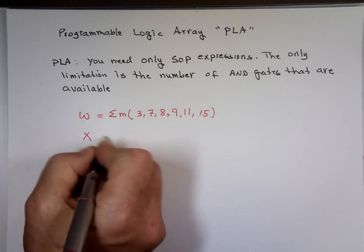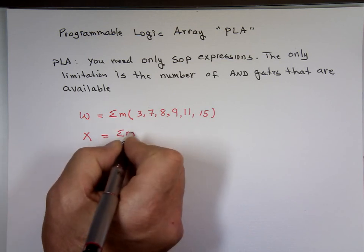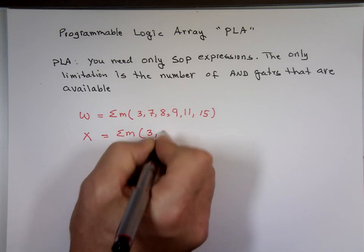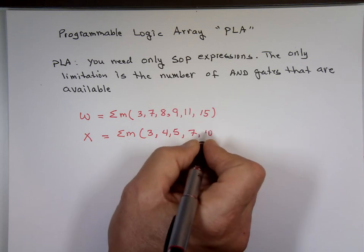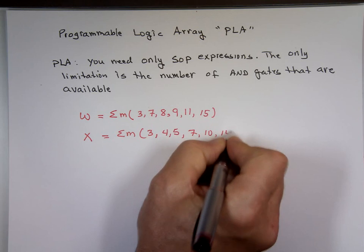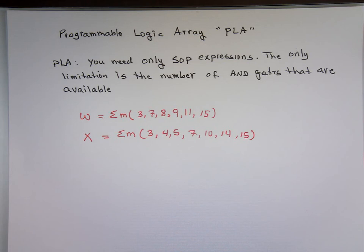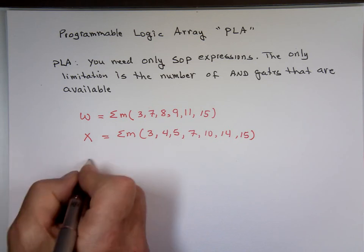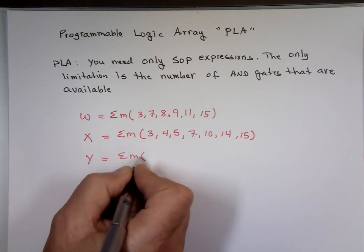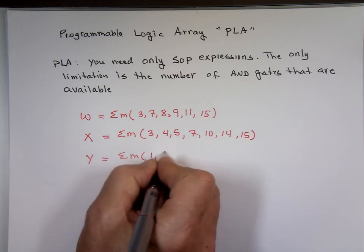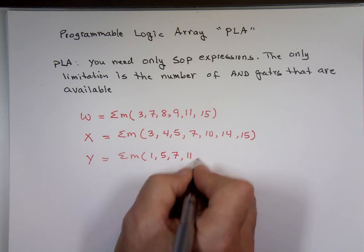And let's say we have W, we have three functions, which is the summation of 3, 4, 5, 7, 10, 14, and 15. X equals summation of 3, 4, 5, 7, 10, 14, 15. And Y, summation of 1, 5, 7, 11, and 15.